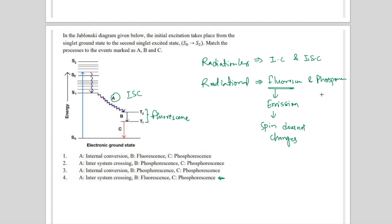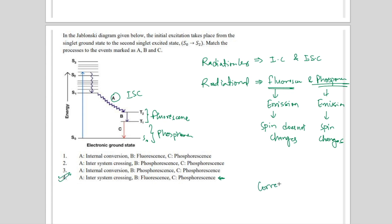Phosphorescence is also an emission phenomenon, but here the spin changes. The transition is from a triplet state to a singlet state — so spin is changing, making it phosphorescence. For that reason, option 4 is correct and cannot be challenged. Don't get confused between these two.